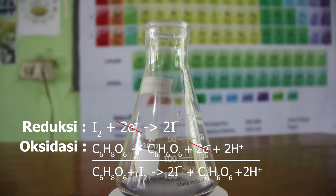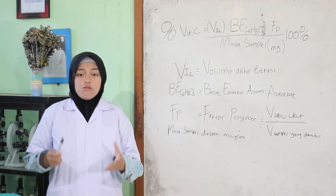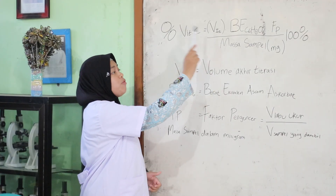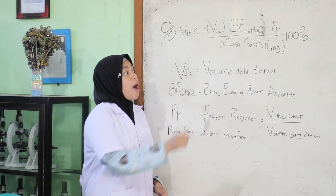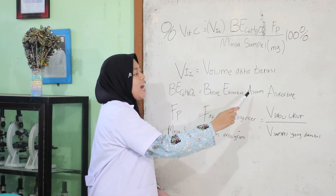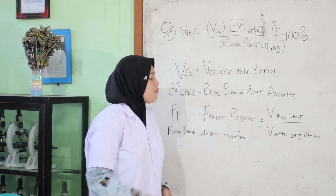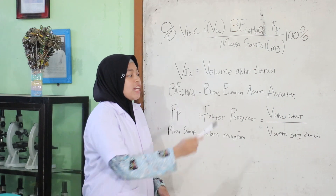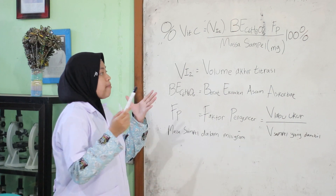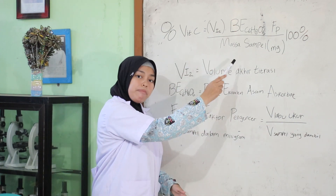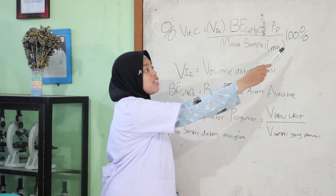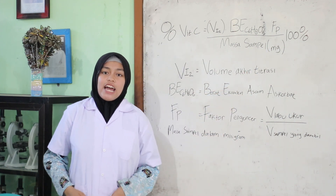Reaksi keseluruhan: C₆H₈O₆ + I₂ → C₆H₆O₆ + 2HI + 2H⁺. Rumus yang digunakan dalam penentuan kadar vitamin C: volume I₂ (volume titrasi) dikali BN C₆H₈O₆ (berat ekivalen asam askorbat) dikali FB (faktor pengencer). Faktor pengencer diperoleh dengan membagi volume labu ukur dengan volume sampel yang diambil, lalu dibagi massa sampel (dalam miligram), dikali 100%.